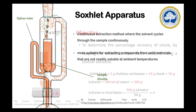To perform the calculations, we need the equivalent weight of sodium carbonate, which is 53 grams, and the solvent volume used for extraction, which is 300 ml in this case. For diluting, we used 10 ml and made it up to 100 ml. For titrating, we used 10 ml of solution against 0.1 normal HCl.